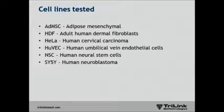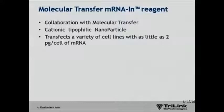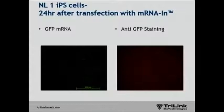The next thing we did was move into tissue culture, in collaboration with Joel Jesse at Molecular Transfer. They looked at six different cell lines: adipose mesenchymal, fibroblasts, HeLa cells, HuVEC cells, neural stem cells, and a neuroblastoma. They have a reagent called mRNA-IN — they developed the lipofectamine reagents — a cationic lipophilic nanoparticle that transfects cells pretty well with messenger RNA. In some iPS cells, you can get basically 100% of cells transfected with these messenger RNAs.